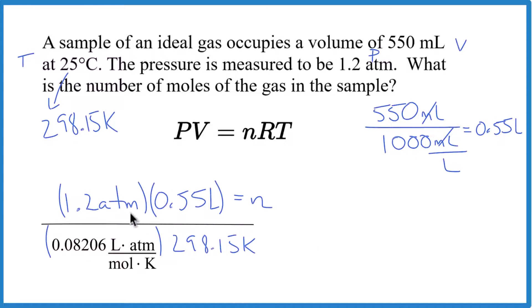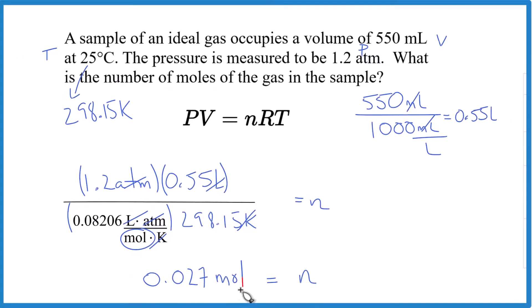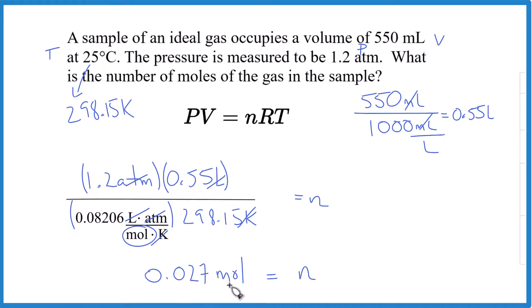If we look at the units here, we have atmospheres here and here, liters here and here, and then Kelvin here and here. So we're going to be left with moles. We can just multiply the top and then multiply the bottom and then divide the numerator by the denominator. We end up with 0.027 moles.